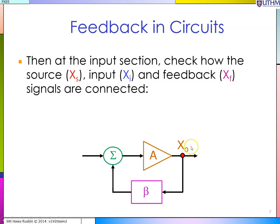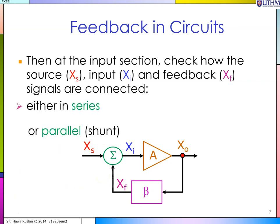Now we move to the summing point at the input section. You have the source signal Xs and the input to the amplifier, plus another input to the summing node coming from the feedback network. You have to determine whether the source input and feedback signal are connected in series or in parallel. This is the second part to determine — first the output type, second how the signals are mixed.